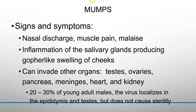Symptoms include nasal discharge, muscle pain, malaise, and inflammation of the salivary glands — specifically the parotid salivary glands located in the cheeks over the masseter muscle. This causes gopher-like swelling of the cheeks. It can invade other organs like the testes, ovaries, pancreas, meninges, heart, and kidneys, causing swelling of those organs.